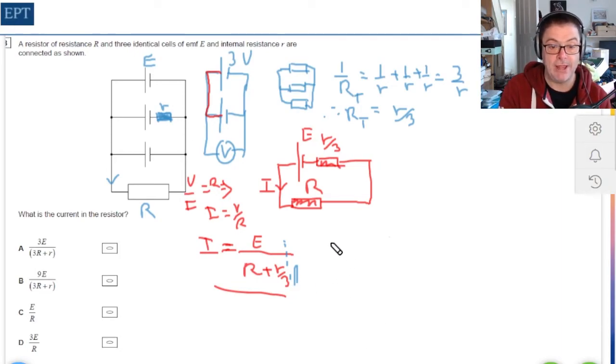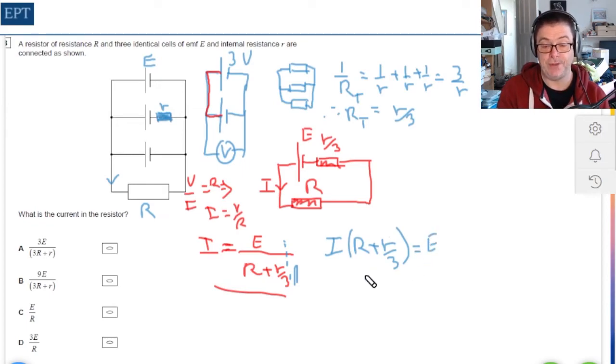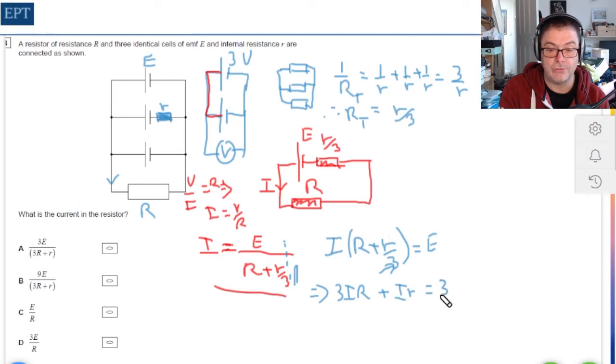Now I'm going to do two steps in one. What I'm going to do is multiply everything by three in an attempt to get rid of this three on the denominator, and at the same time expand out that bracket. So that's going to give us 3I capital R plus I small r equals 3E.